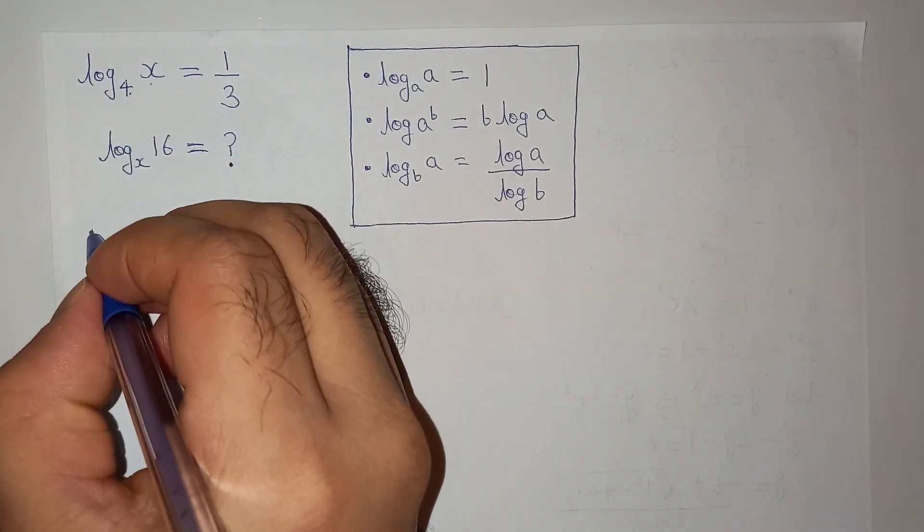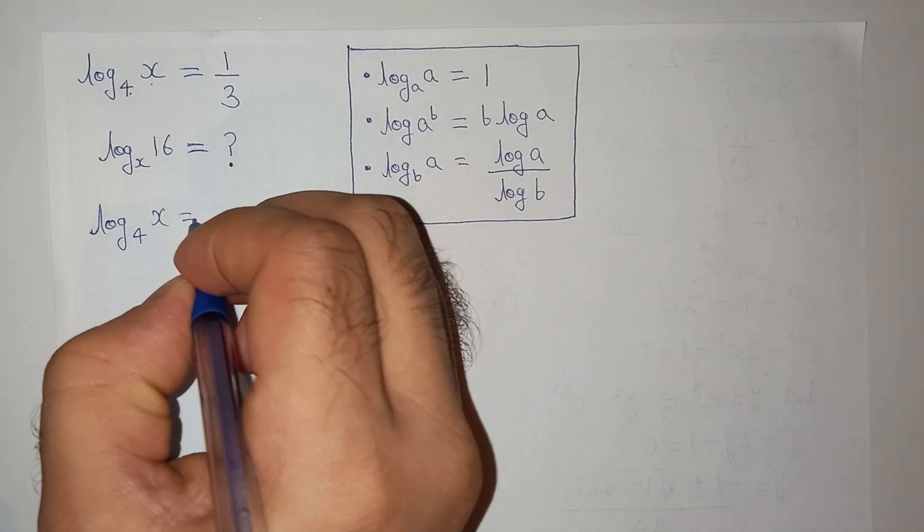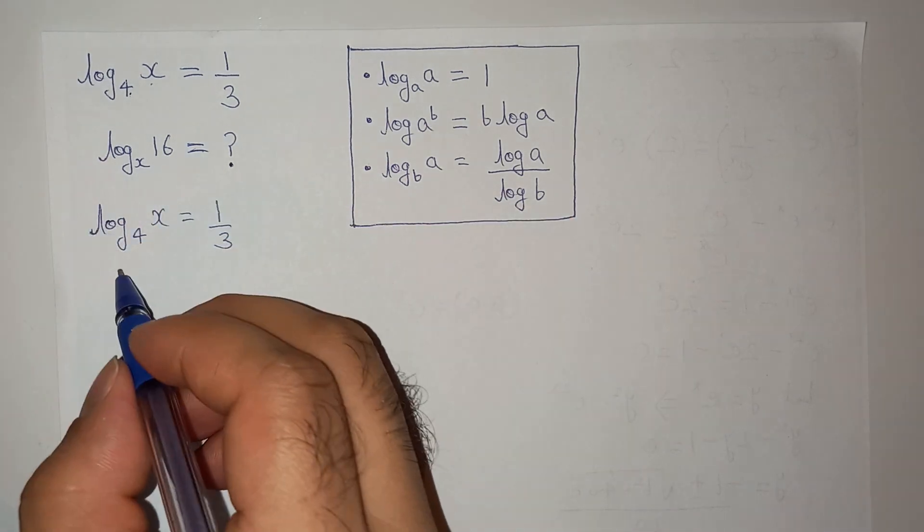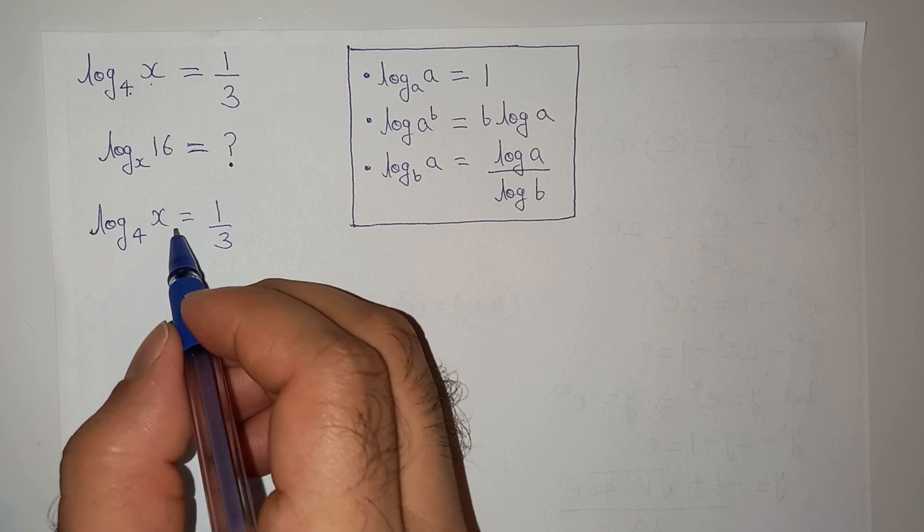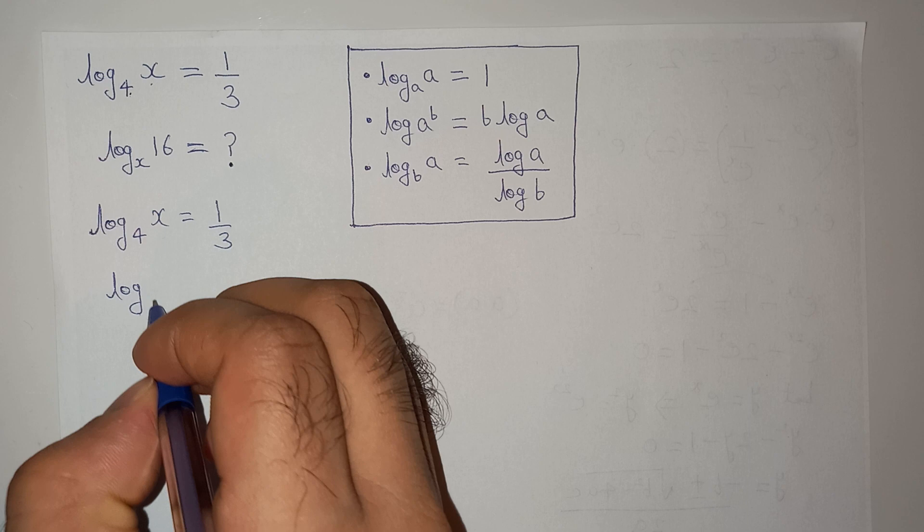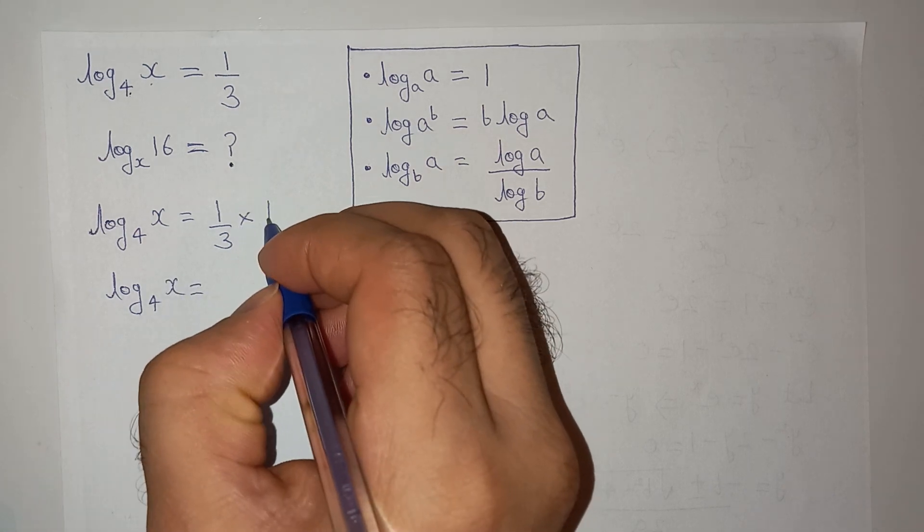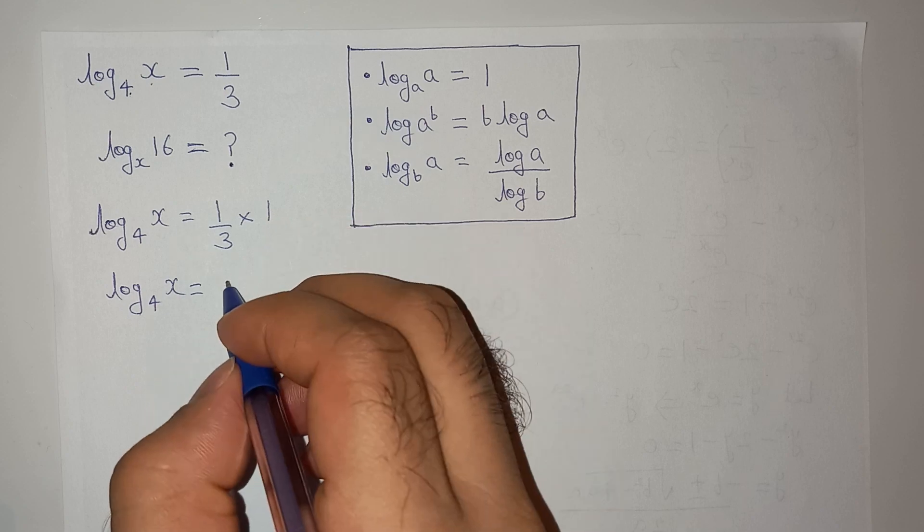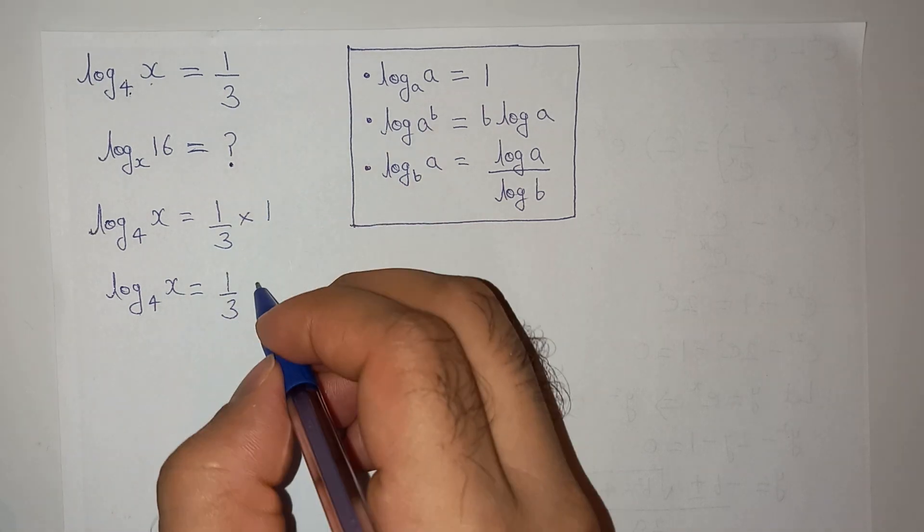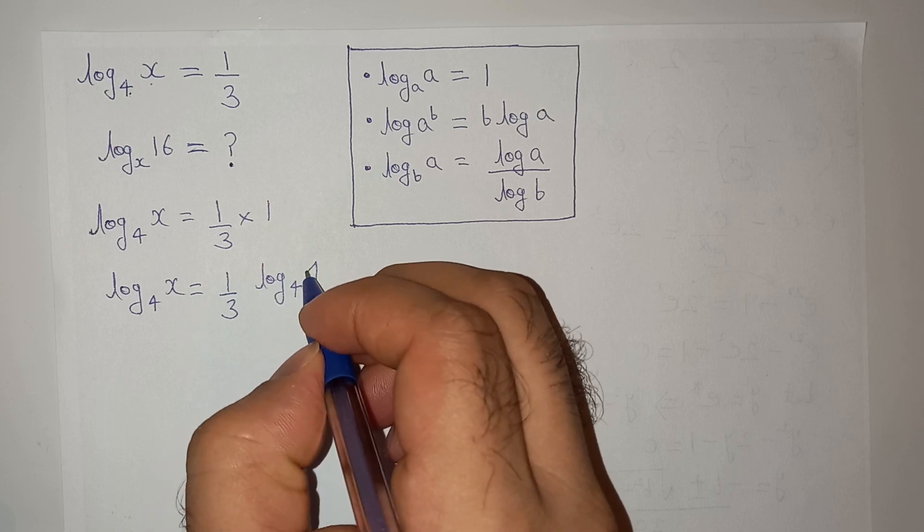I will write the question here again: log₄x = 1/3. So I can write this as log₄x = 1/3 × 1. This will be 1/3, and this one can be written as log₄4.